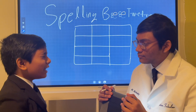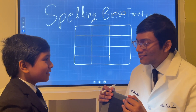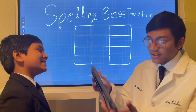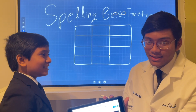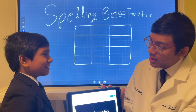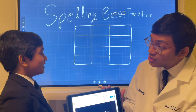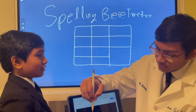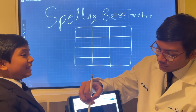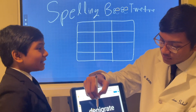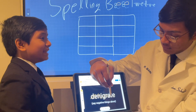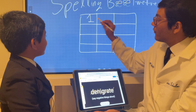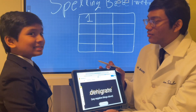Are you ready? Get on with it! I was born ready! Alright, we'll see about that. The first word is denigrate. Denigrate. If you want me to use it in a sentence or give you the definition, feel free. Denigrate. D-E-N-I-G-R-A-T-E. Denigrate. That's one point for denigrate. Yay!